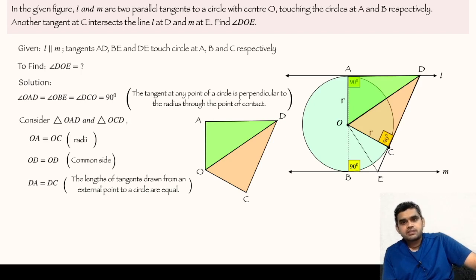Then their length must be equal. From here we get that these two triangles, triangle OAD and triangle OCD, are congruent to each other by side-side-side theorem.